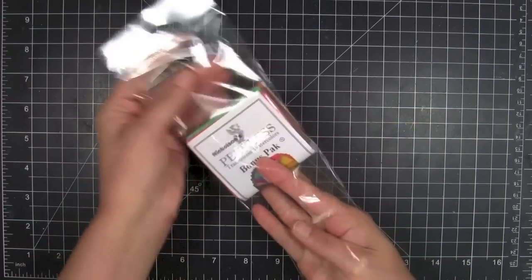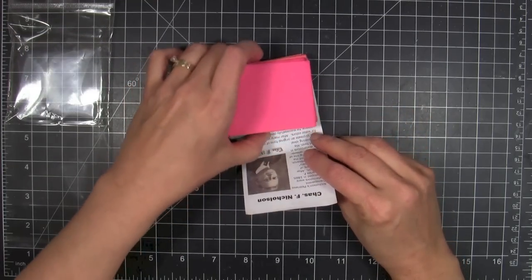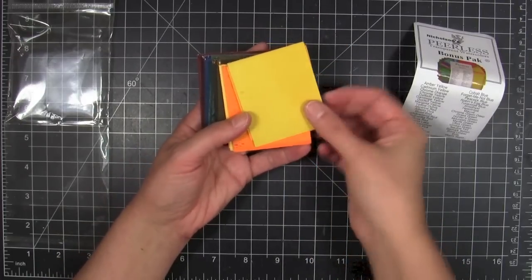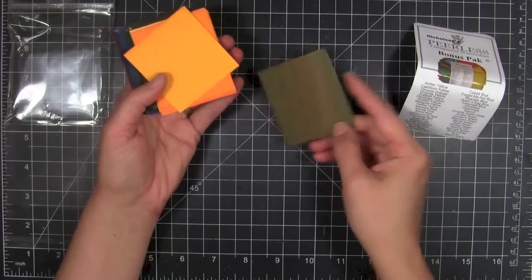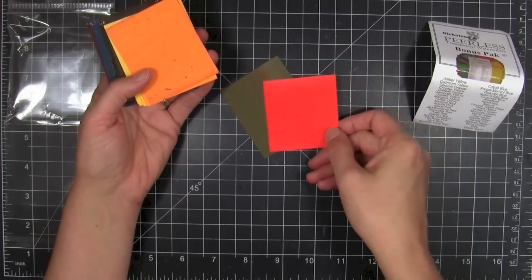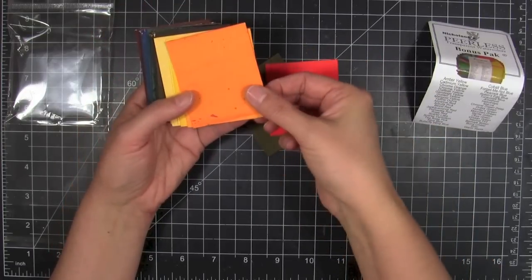When I did my original watercolor article a few months ago, the peerless hadn't come into the shop, but we've got them now and I finally got my hands on a set that I could play with. This is the small bonus pack and it has 40 colors in it. The unusual thing about peerless watercolors—they've been made for over a hundred years—is they are an intensely concentrated mineral dye, not pigments.